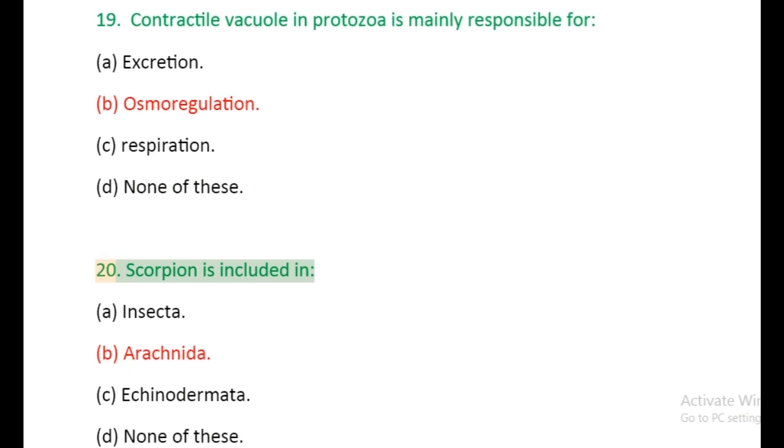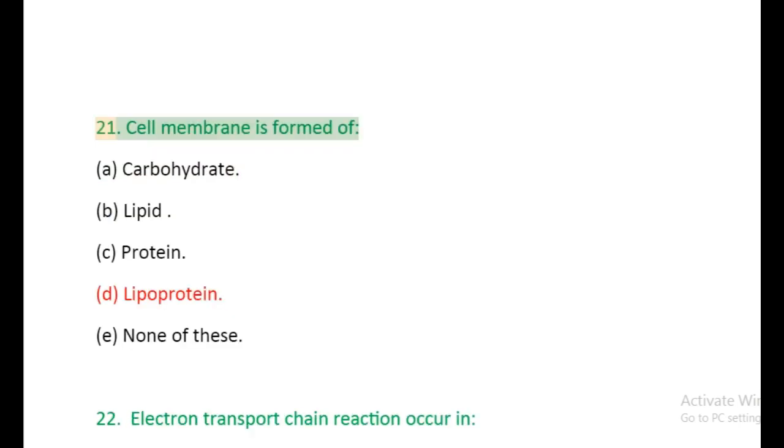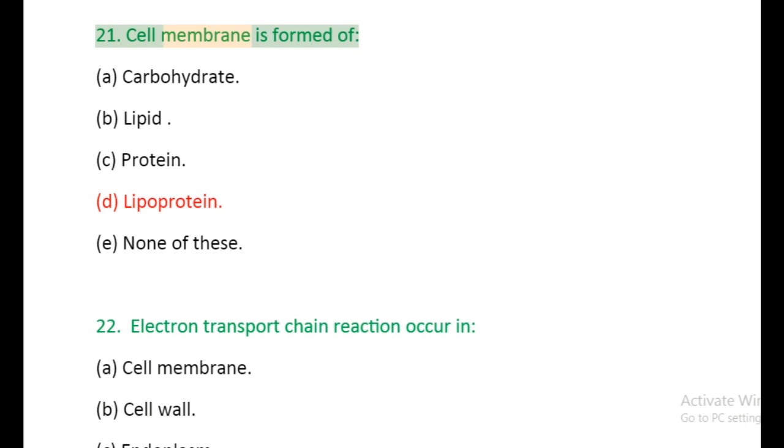Question 20: Scorpion is included in: (a) Insecta, (b) Arachnida, (c) Echinodermata, (d) None of these. Question 21: Cell membrane is formed of: (a) Carbohydrate, (b) Lipid, (c) Protein, (d) Lipoprotein, (e) None of these.